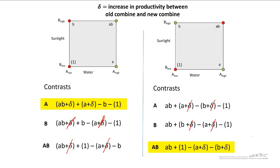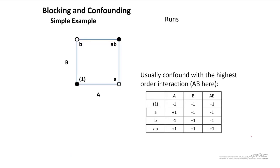In general, we want to confound the blocking effect with the highest order interaction that we can. And in this case, for a two-squared design, that's AB. In order to do this, we can set up our table, and we look at the highest order interaction. So that's AB here.